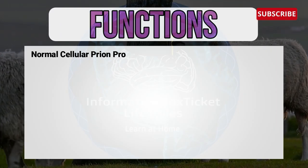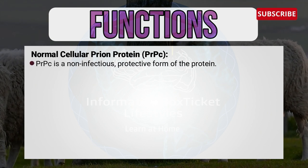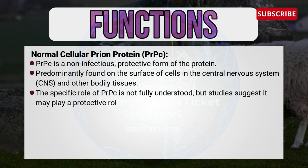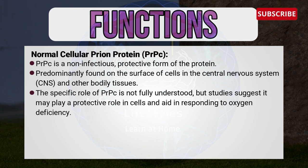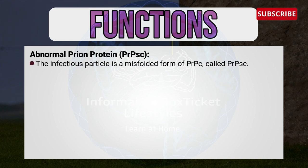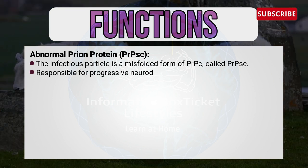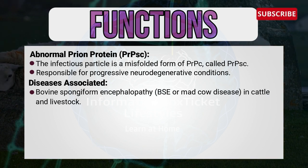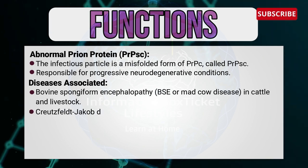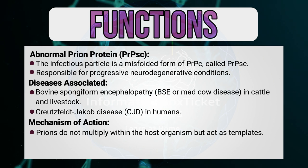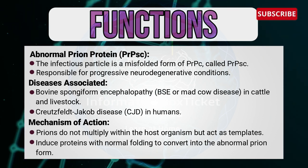Function of Prions: Normal cellular prion protein is a non-infectious protective form of protein, predominantly found on the surface of cells in the central nervous system and other bodily tissues. The specific role of cellular prion protein is not fully understood, but studies suggest it may play a protective role in cells and aid in responding to oxygen deficiency. The infectious particle is a misfolded form of cellular prion protein called abnormal prion protein, responsible for progressive neurodegenerative conditions. Diseases associated include bovine spongiform encephalopathy (BSE) or mad cow disease in cattle, and Creutzfeldt-Jakob disease in humans. Prions do not multiply within the host organism but act as templates, inducing proteins with normal folding to convert into an abnormal prion form.